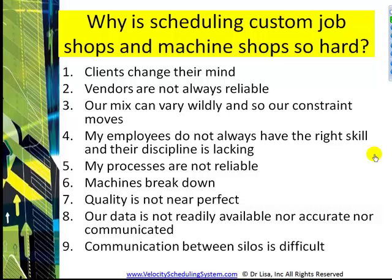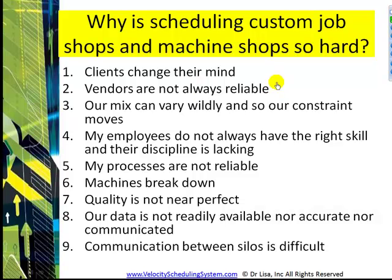You're probably familiar with this list and can probably add to it. We're really dealing with so many sources of variability. We get the schedule and then clients change their mind, and we have to reshuffle based on whether they want to move something forward or back. Vendors are not always reliable — in custom job shops and machine shops we're often using outsourced vendors for plating, powder coating, heat treating, and they don't always do what they said when they said they would. When something doesn't come back when promised, we have to reshuffle our schedule again.